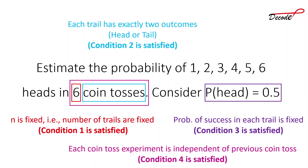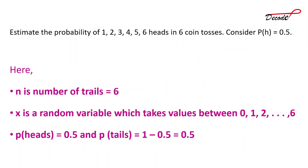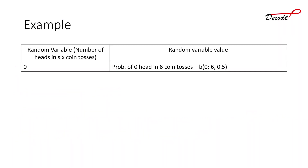Calculation procedure: since all conditions for applying binomial distribution are satisfied, the binomial distribution procedure can be applied to find the probability of number of heads in six coin tosses. From the problem: n (number of trials) is 6, x (random variable) can take values 0 to 6, probability of head p is 0.5, and probability of tail is 0.5.